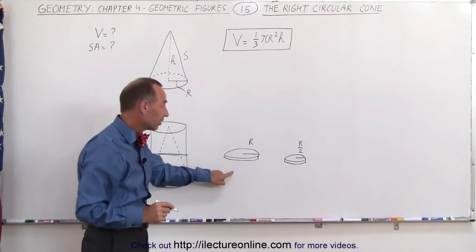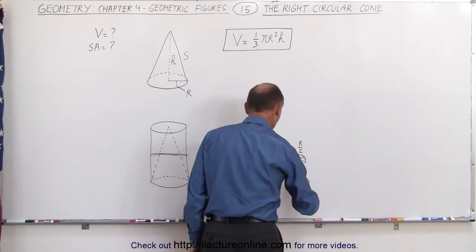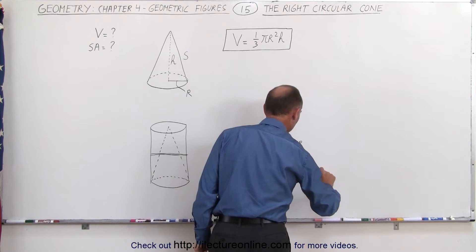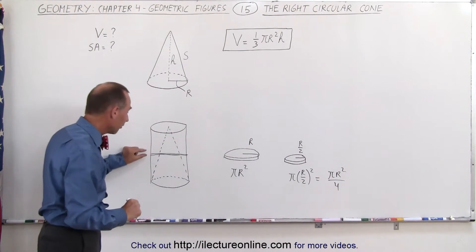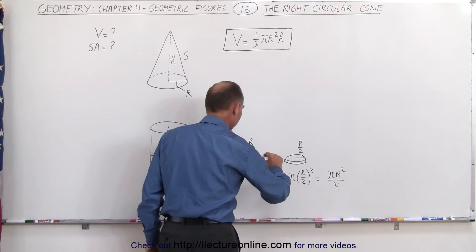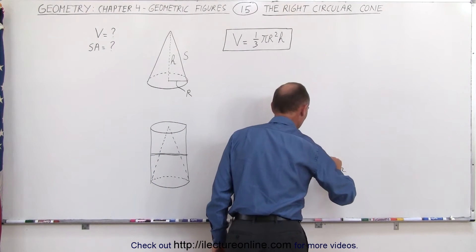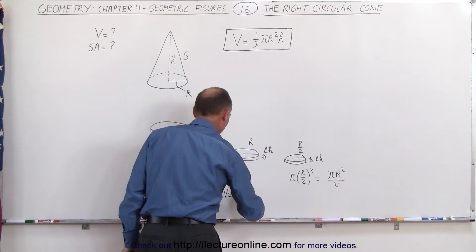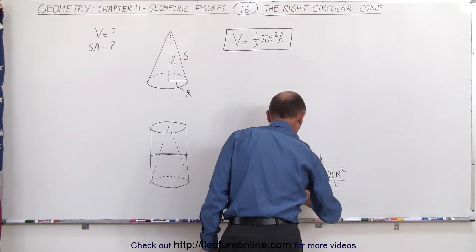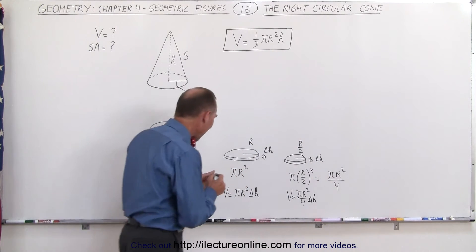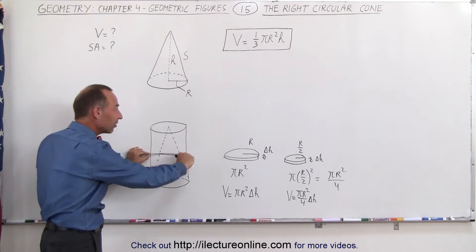If we calculate the surface area of the cylinder's disc, it would be pi R squared. The surface area of the cone's disc would be pi times (R over 2) squared, which equals pi R squared over 4. If we multiply each by a small thickness delta H, we get the volumes. The cylinder disc volume is pi R squared times delta H, and the cone disc volume is pi R squared over 4 times delta H. So halfway up the cone, a slice of the cone is only one-quarter the volume of the corresponding cylinder slice.